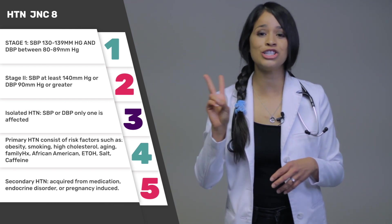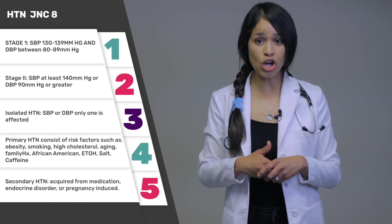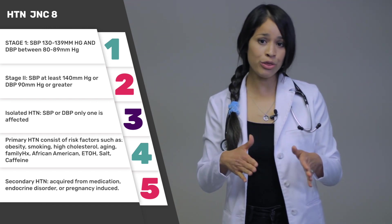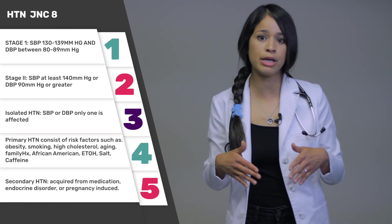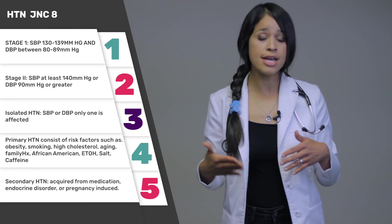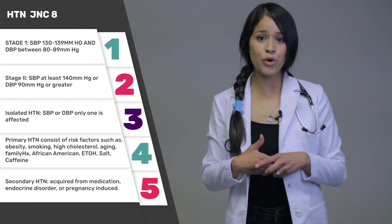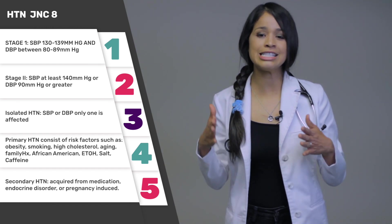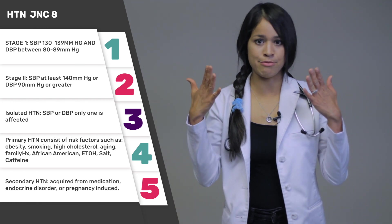Stage one is when your systolic blood pressure is between 130 to 139 millimeters of mercury, and your diastolic blood pressure is between 80 to 89 millimeters of mercury. Stage two is when your systolic blood pressure is at least 140 millimeters of mercury, or your diastolic is 90 millimeters of mercury or greater. Yes, I have that committed to memory.